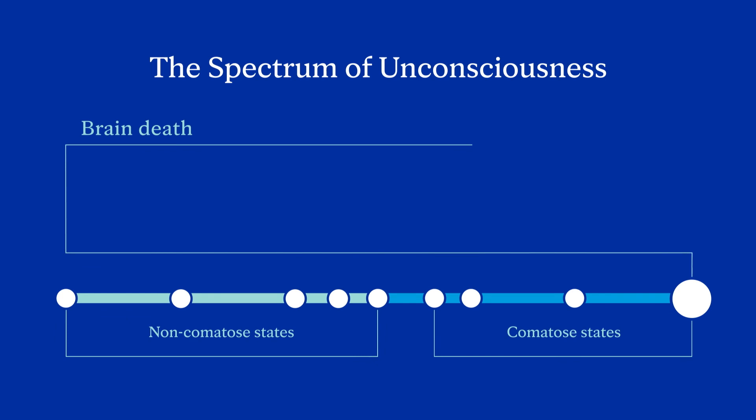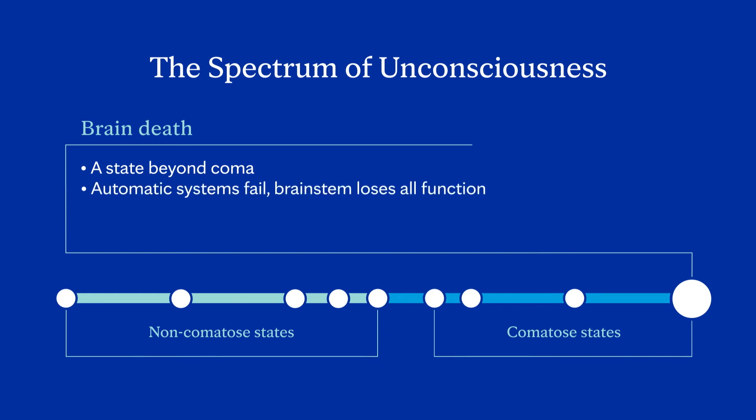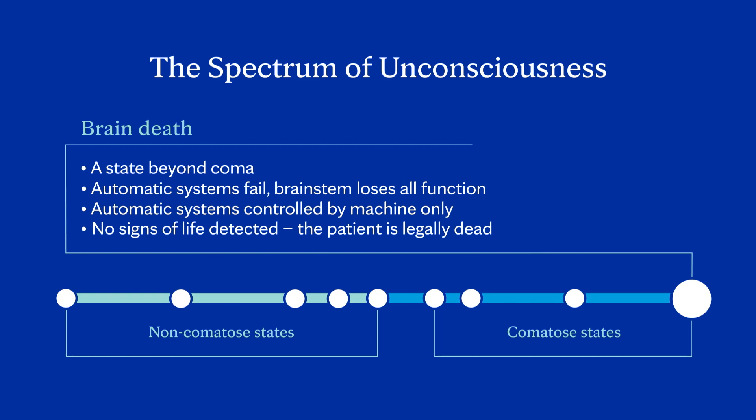Brain death: brain death is a state beyond coma. At this point, the individual's automatic systems — such as their heart rate, blood pressure, and breathing — fail, and the brainstem loses all function. All automatic systems are only continuing because a machine is controlling them for the individual. This means no responses, no grimacing, no coughing, no eye or limb movements, no reflexes, and no breathing. Essentially, no signs of life are detected. The individual is legally dead.